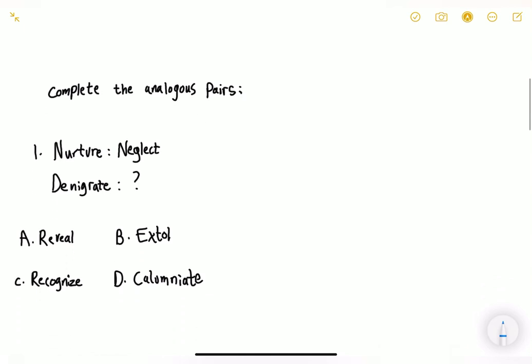So question number one, it's complete the analogous pairs. Question number one says, nurture, neglect, denigrate, question mark. So what are we supposed to find? First, let's identify the relationship between nurture and neglect. Nurture and neglect are a pair of antonyms. What does that mean? We're supposed to find the opposite pair, meaning what they oppositely mean.